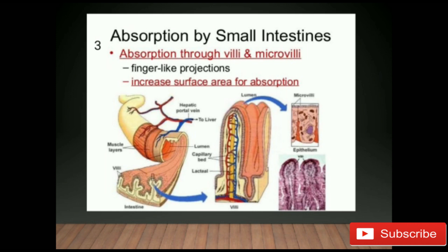The third stage is absorption, which occurs through villi and microvilli — the finger-like projections present in the small intestine that increase the surface area for absorption. The next step is absorption of the digested food into the blood. After absorption in the small intestine, the remaining undigested food mixes with water and moves into the large intestine, which absorbs most of the water.